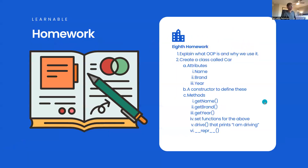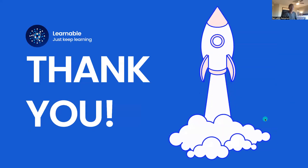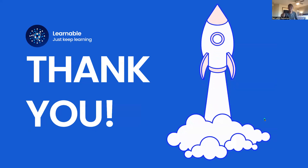We're almost done. Here's the homework: first, explain OOP and why we use it. Second, create a class called Car with attributes name, brand, and year; a constructor to define these; getter and setter methods for all attributes; a `drive` function that prints 'I am driving'; and a `reproduce` function formatted however you like. If you need help, email silalathakanamuri@gmail.com or join the weekly tutoring sessions at the Learnable organization. This is one of the most important topics — you're almost done with the basics of Python. See you in the next class!